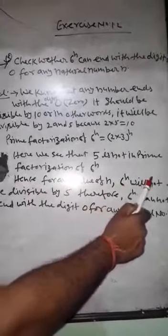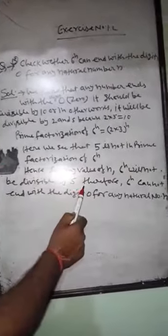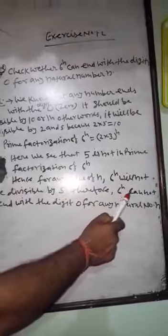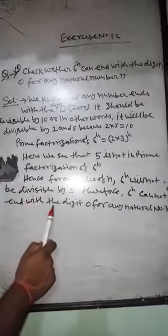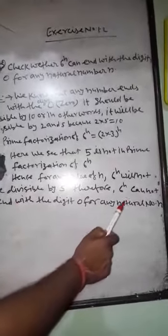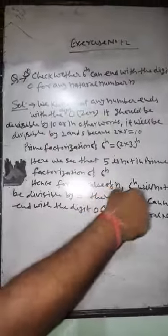Hence for any value of n, 6 to the power n will not be divisible by 5. Therefore, 6 to the power n cannot end with the digit 0 for any natural number.